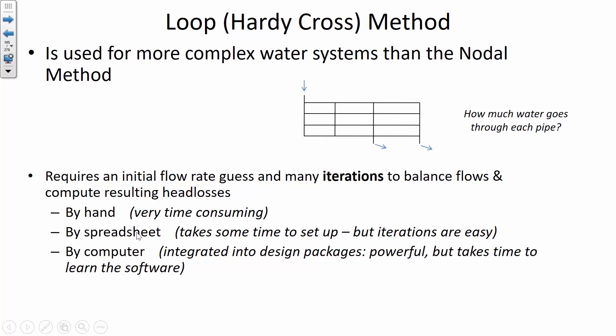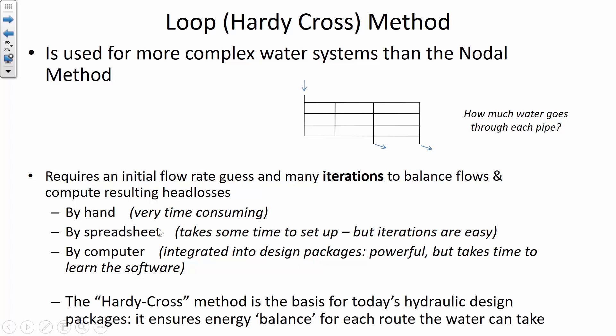The Hardy Cross method does an energy balance for all routes. Remember: it doesn't matter which route you take — if you start at the top and end at the bottom, the energy change is the same. That applies in a complicated pipe network too: for any two points, regardless of which path the water takes, the head loss through each path must be the same. That's the basis of this method.